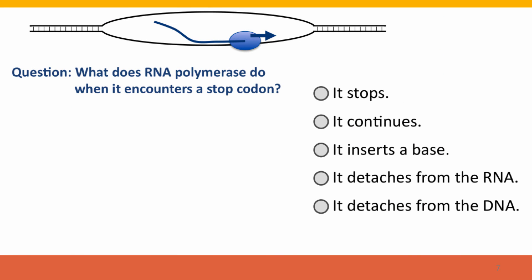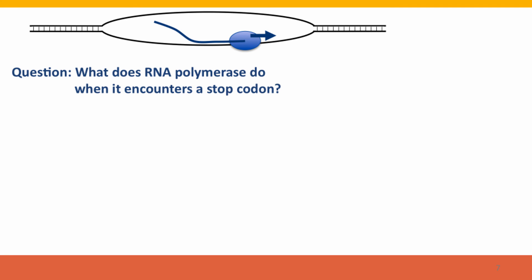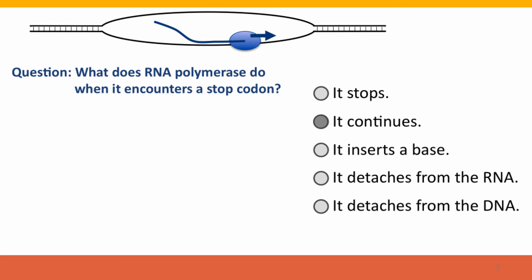So here's a question. What does RNA polymerase do when it encounters a stop codon? Lots of students find this a tricky question because the processes are so confusing. The correct answer is, of course, that RNA polymerase doesn't care about stop codons at all. Stop codons are signals that are read in RNA by the ribosome. RNA polymerase sees stop codons as just like any other component of the DNA, and it just keeps going.